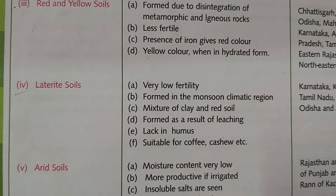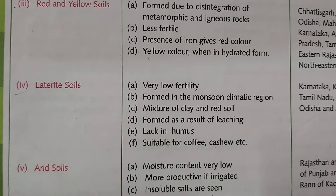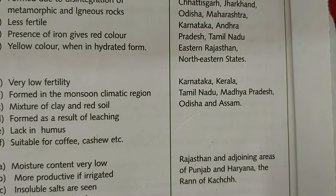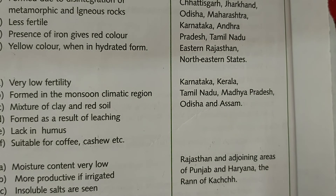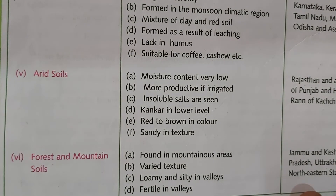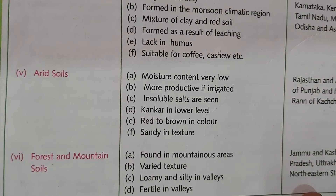Due to leaching, nutrients in the topsoil diminish and move below the root zone. Laterite soil is suitable for crops like coffee and cashew. The areas where it is found include Karnataka, Kerala, Tamil Nadu, Madhya Pradesh, Odisha, and Assam.